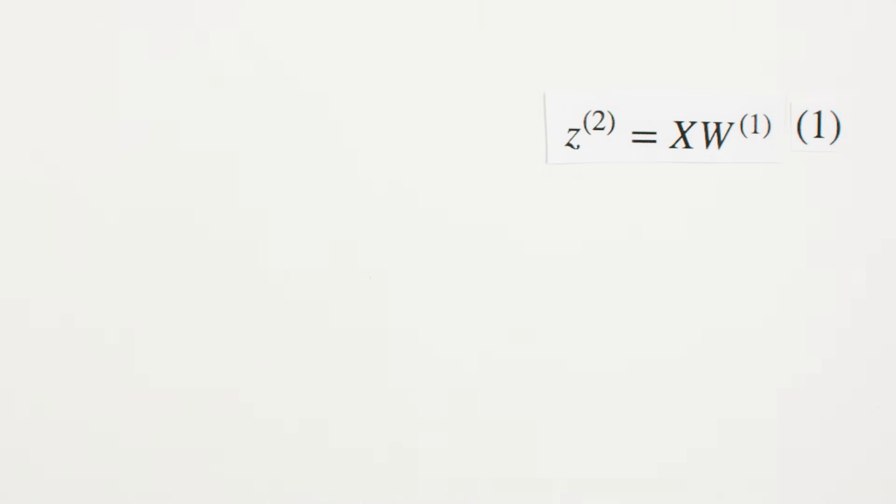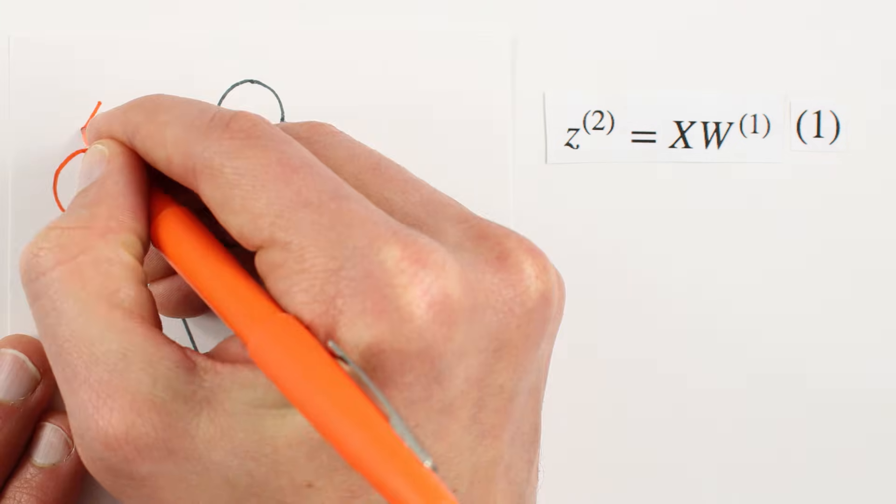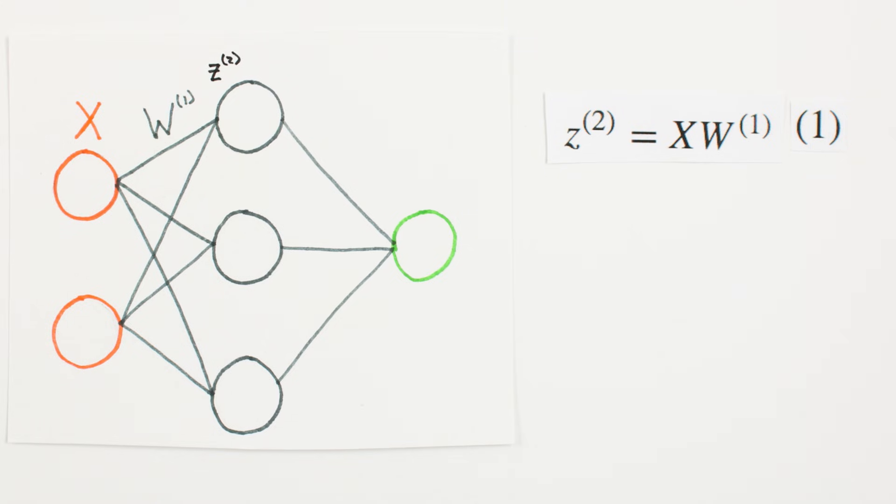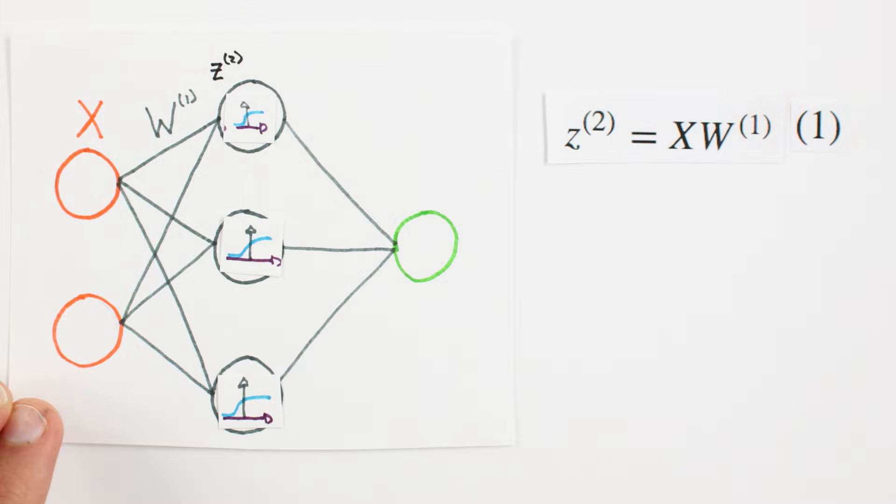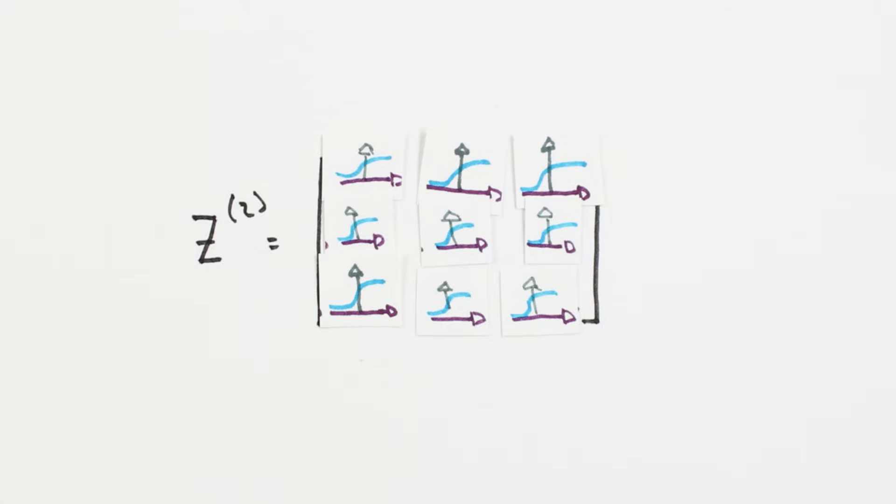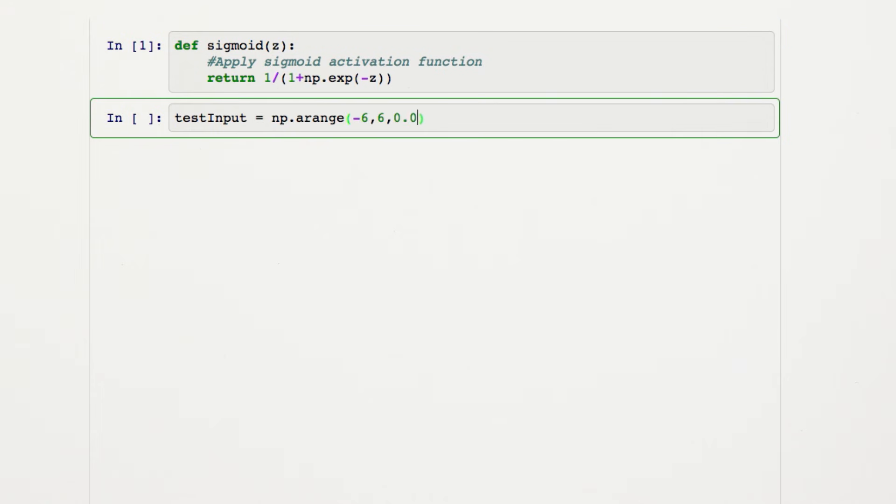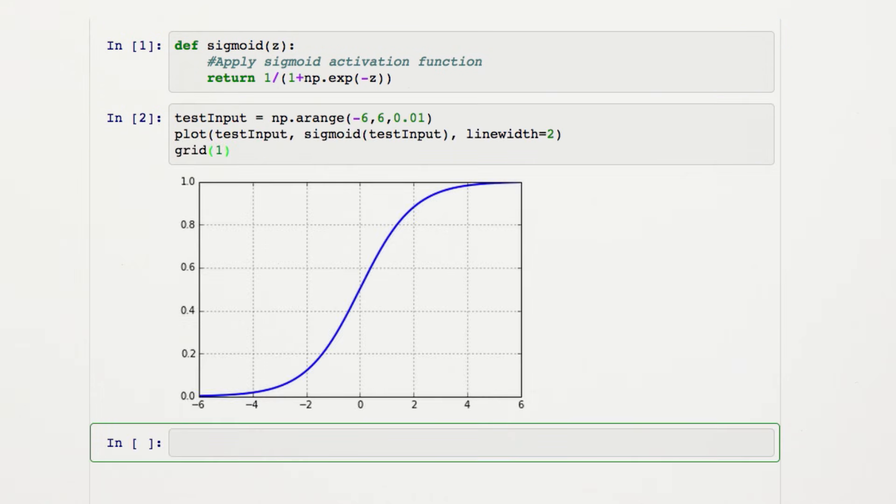Matrix notation is really nice here, because it allows us to express the complex underlying process in a single line. Now that we have the activities of our second layer, Z2, we need to apply the activation function. We'll independently apply the function to each entry in matrix Z using a Python method for this called sigmoid, because we're using a sigmoid as our activation function.